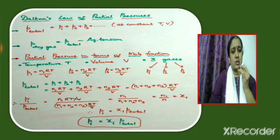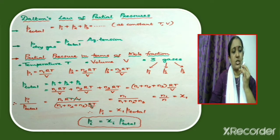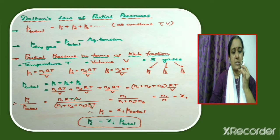Dalton's law of partial pressures. Suppose we have a mixture of non-reactive gases at constant temperature and constant volume. The total pressure exerted by this mixture will be equal to the sum of the partial pressures of the individual gases.